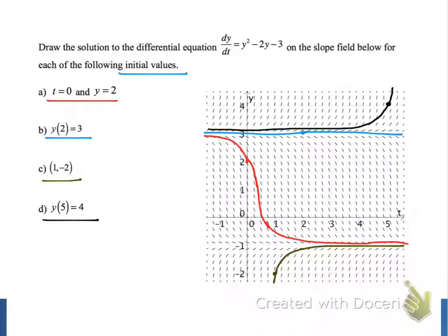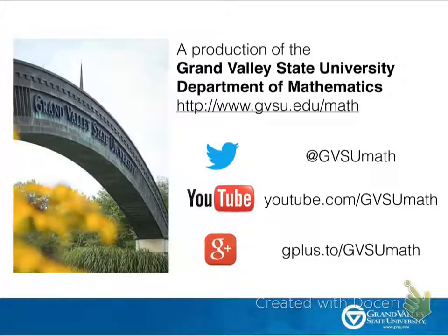Each of these four graphs is a solution to the differential equation, and there are infinitely more solutions to the differential equation. However, for each initial value that we were given, we were able to use the slope field to help us draw the unique solution to the differential equation that passes through that given initial value. Thank you.